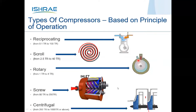The screw compressor technology has reduced power consumption drastically. Although it is a 20-year-old technology globally, it has been seen in India for the past five years. Gas is compressed between two screw lobes — one male and one female. We can increase or decrease the RPM of the screw for a more efficient system. Screw technology is also used for minus applications because it can cater to heavy pressure differentials.